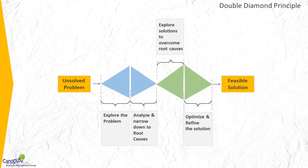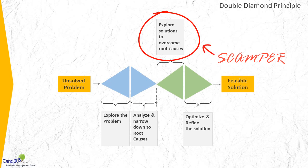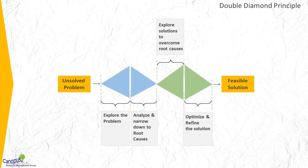When we are using a problem solving approach, whatever methodology you use, there is always a divergence and a convergence. SCAMPER is largely useful when we want solutions. When we are trying to define what the problem itself is, SCAMPER may not be very useful. In fact, if you are a participant in a brainstorming session, you can use SCAMPER very effectively to generate viable solutions.